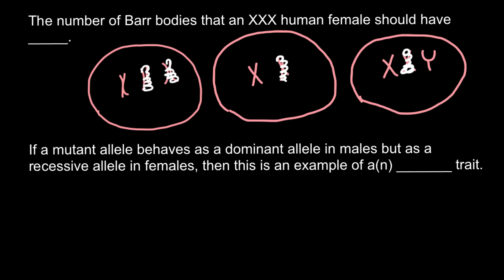Only in the case when he is XXY. Another example would be XXXX — now you know that this is going to be a female, and this female would make three Barr bodies.